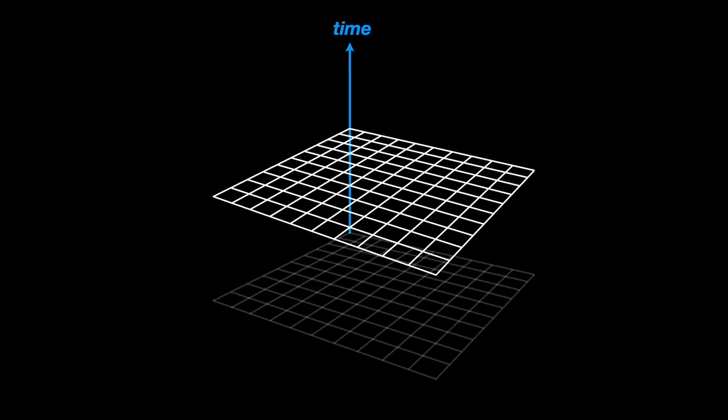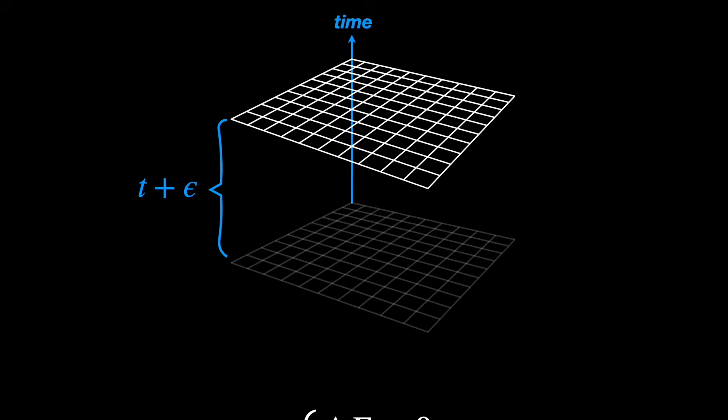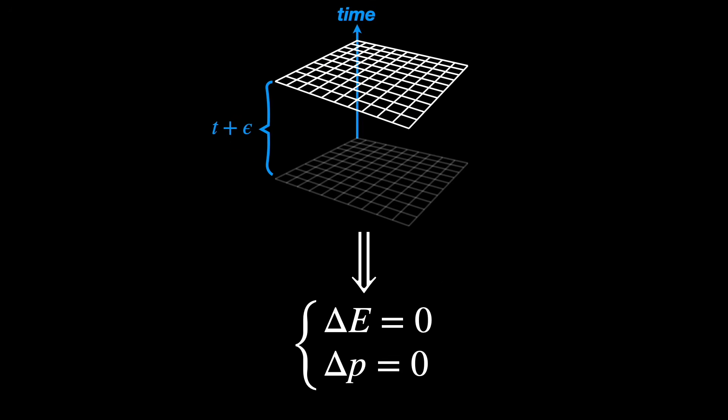Noether's theorem tells us that whenever a system has continuous symmetry, there is a conserved quantity. In the context of Einstein's equation, if the laws of physics, and more importantly the geometry itself, remain unchanged when you shift the coordinate system slightly in space or time, that's called translational symmetry. From this symmetry, Noether's theorem gives us conservation of energy and momentum.